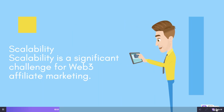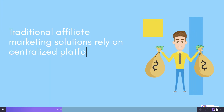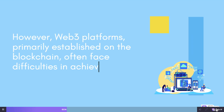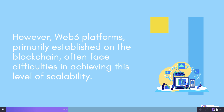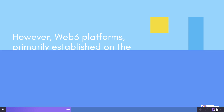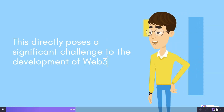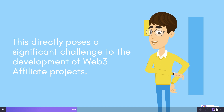Scalability is a significant challenge for Web3 Affiliate Marketing. Traditional affiliate marketing solutions rely on centralized platforms capable of managing a wide array of transactions and extensive interactions. However, Web3 platforms, primarily established on the blockchain, often face difficulties in achieving this level of scalability. Transaction throughput limitations and the high costs associated with blockchain networks can hinder the deployment of Web3 Affiliate Projects, posing a significant challenge to their development.